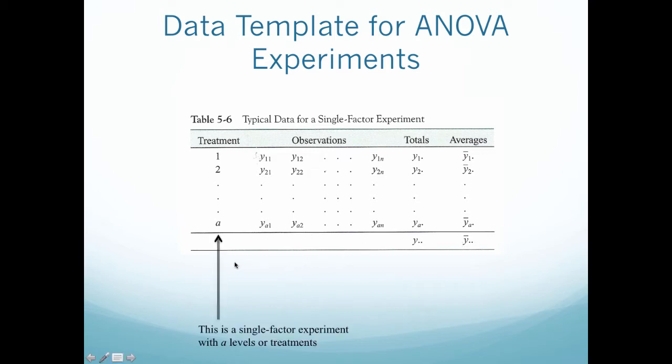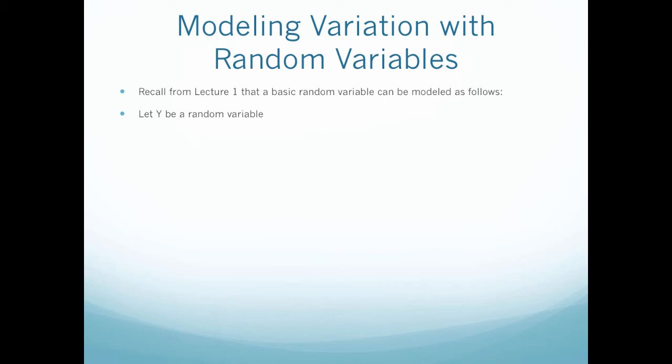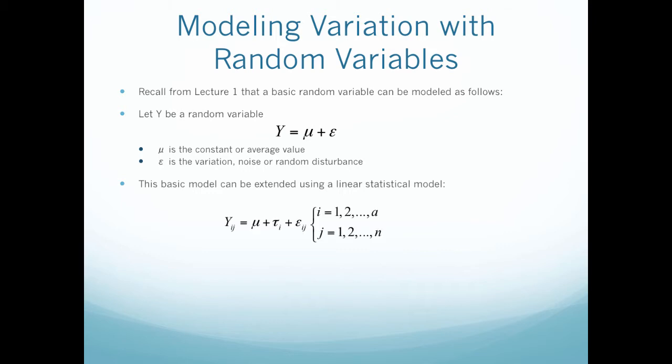So here when we're dealing with single factor experiments, we have A levels or treatments, and then the observations for each treatment can be represented by a random variable. You're going to see so many formulas with so many different letters and symbols and variables that you just need to remember we have A treatments with N observations each. If you remember from Lecture 1 that a basic random variable can be modeled as follows, where Y is a random variable. Y equals mu plus epsilon, where mu is my average or my constant, and epsilon is the variation.